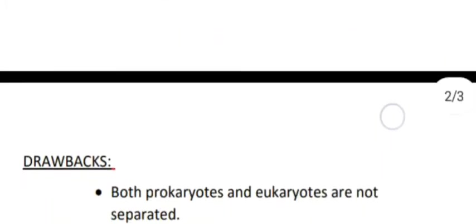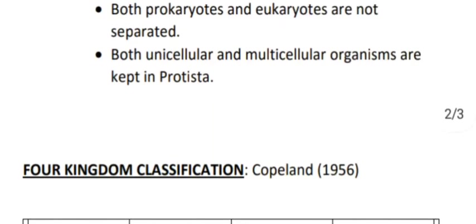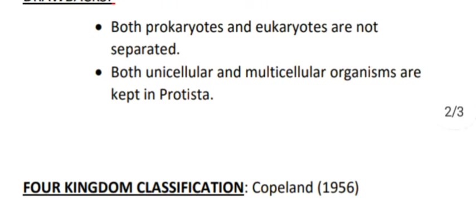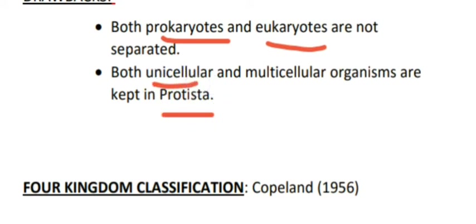The three kingdom classification also had drawbacks. Prokaryotes and eukaryotes were not separated, because both were placed in the kingdom Protista. Additionally, unicellular and multicellular organisms were both included in Protista. These were the drawbacks of the three kingdom classification.